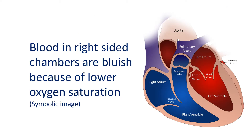Oxygen saturation is measured by withdrawing small samples of blood from the concerned chamber. The samples are analyzed in equipment known as a blood gas analyzer, which gives the amount of oxygen in blood as well as other important information. Usually oxygen levels are lower in the right-sided chambers and pulmonary artery, and higher in the left-sided chambers and aorta.